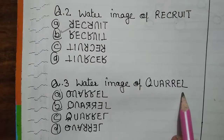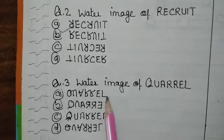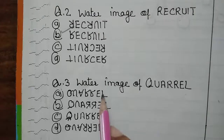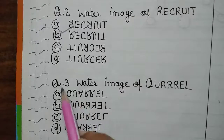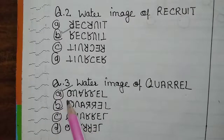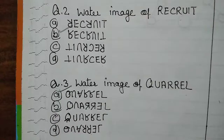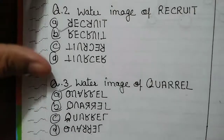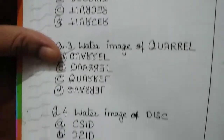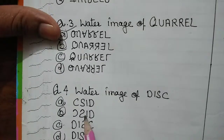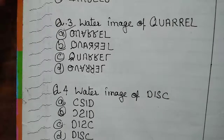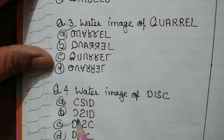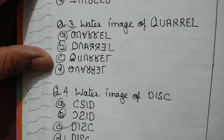Now come to the third question: the water image of 'curl'. You have to select the water image of 'curl' out of four options, and when we compare one by one we find that the first option is the water image of this word. Now the fourth question is the water image of 'disc'. When we compare one by one, C option is the correct option — that is the water image of disc.